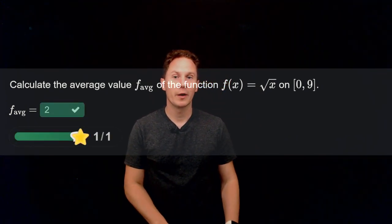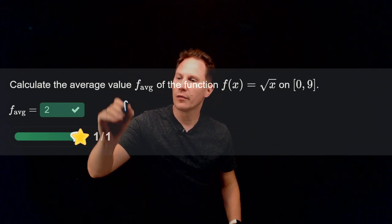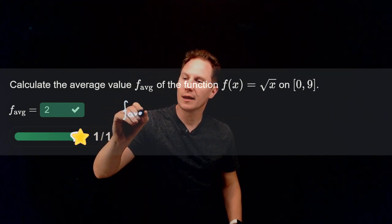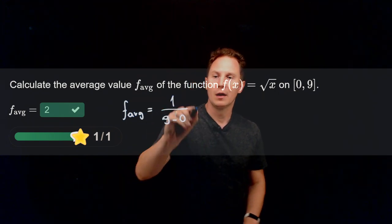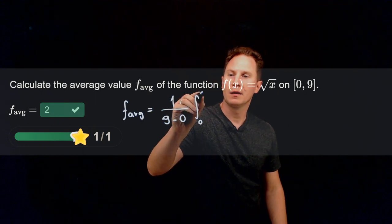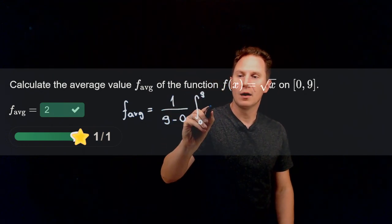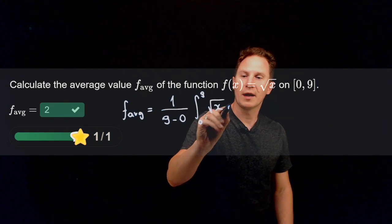Hope you paused it, and I found its average value to be 2. Again we find the average value by taking the reciprocal of the length of the interval. So that's 1 over 9 minus 0 times the definite integral from 0 to 9 of the function square root of x dx.